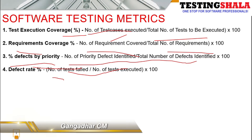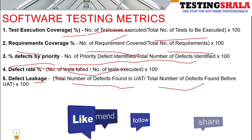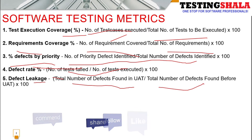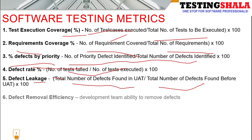The fifth metric is defect leakage. Defect leakage refers to defects found during user acceptance testing (UAT). For example, if 10 defects are found during UAT and 100 defects were found before UAT, then 10 divided by 100 means 10% of defects leaked — meaning those defects escaped from the testing or development team through to the UAT team.